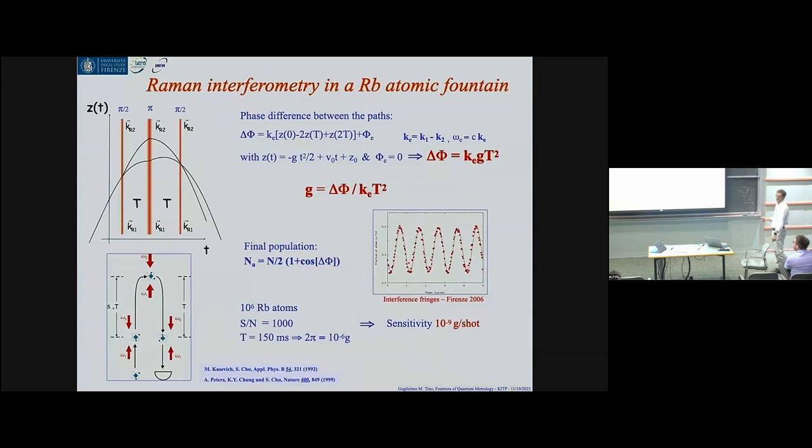Here, k is the wave vector of the light used to split, reflect, and recombine the two parts of the interferometer. This can be used as a gravimeter: if you know these quantities, you can measure the gravitational acceleration.